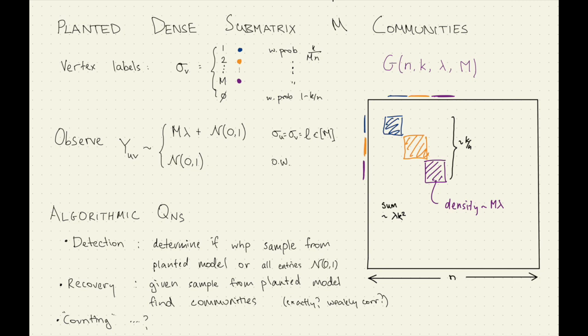If you think about how you'd do that — the total size is still going to be approximately K. For equal-sized communities, you'd place each vertex into one of M color classes with probability one-over-M times K-over-n. The sum is correct: each of these things gives you one-over-M times lambda K squared. So the sum is the same as having one planted community. This is why we define the counting problem: distinguishing one planted submatrix from having M communities, where we don't want the trivial test to work.